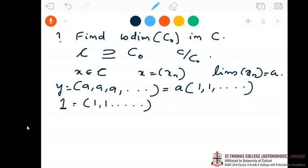Now what about x minus y? We know that x converges to a. Y also converges to a. That means x minus y converges to 0, because both x and y converge to a. So x minus y converges to 0, and this means x minus y is in c naught.